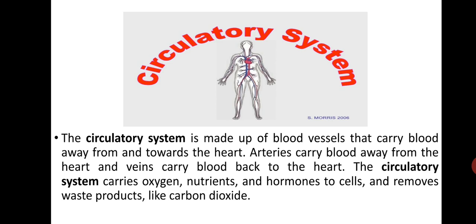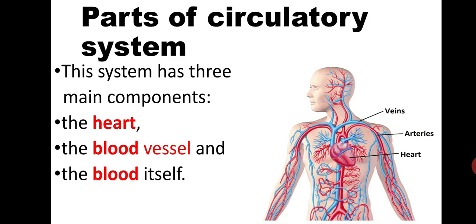The circulatory system is made up of blood vessels that carry blood away from and towards the heart. Arteries carry blood away from the heart and veins carry blood back to the heart. The circulatory system carries oxygen, nutrients, and hormones to the cells and removes waste products like carbon dioxide.